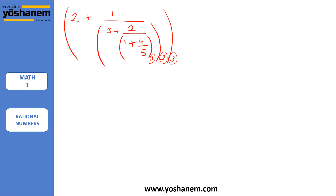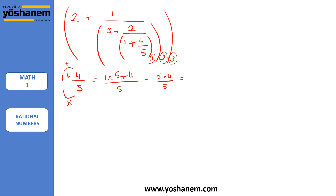Let's start with number one. It says 1 plus 4 over 5. You can do this by getting common denominators, or simply multiplying 1 by 5 and then adding with 4. So it's going to be 1 times 5 plus 4 over 5. Since multiply comes first, 1 times 5 is 5 plus 4 over 5, so the result is 9 over 5. My number one is 9 over 5.